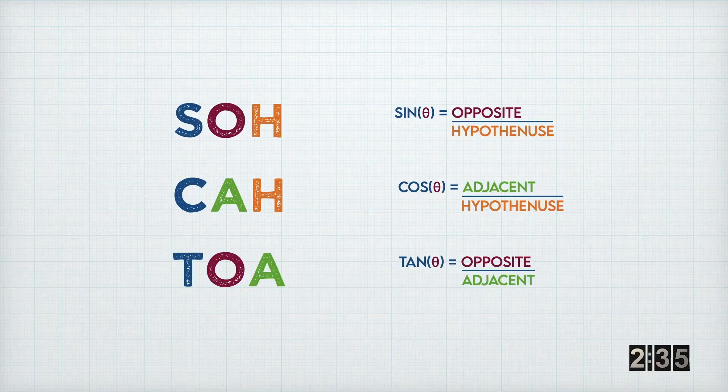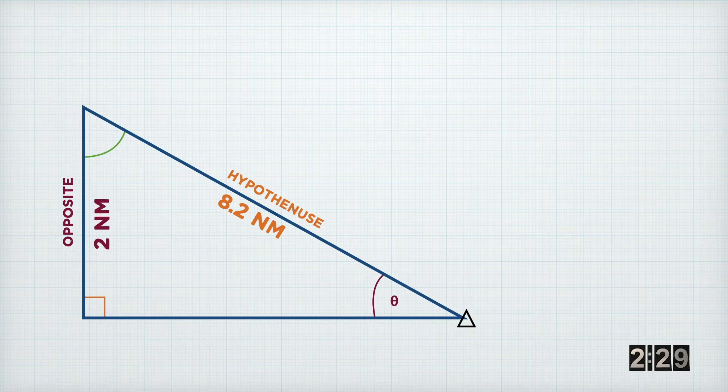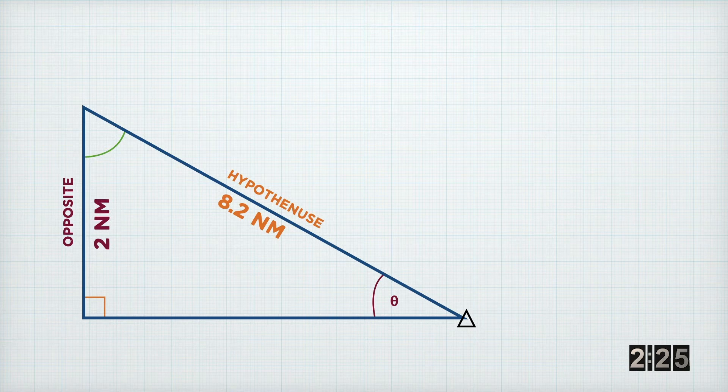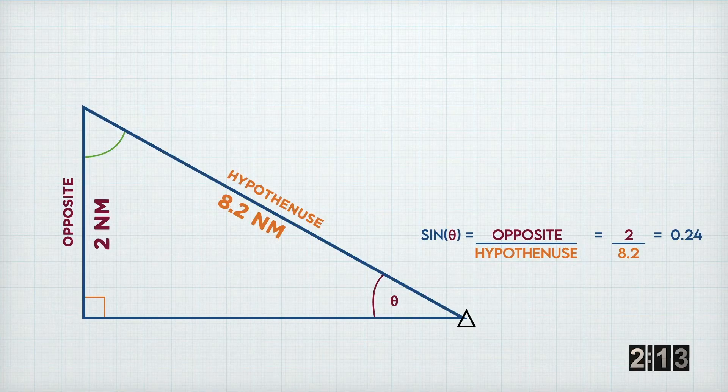Sometimes you'll only know the length of the sides. On this triangle, we're still interested in the same angle, and I've labelled a couple of the sides. We can see we've got the length of the opposite side, and we've got the hypotenuse. So from SOHCAHTOA, we can see we want to use the sine function, and the formula would look like this. So do that on a calculator, and you'll come out with something like 0.24.